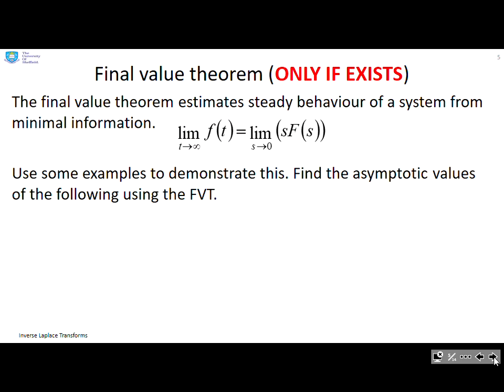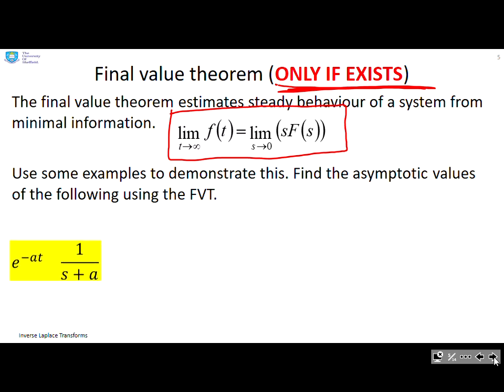The final value theorem: the key point is you can only use this if the limit exists. Don't use it on a signal which is divergent because you will just get rubbish. The formula says the limit as t goes to infinity of f(t) is the same as the limit as s goes to zero of s times F(s). We can demonstrate this with some simple examples.